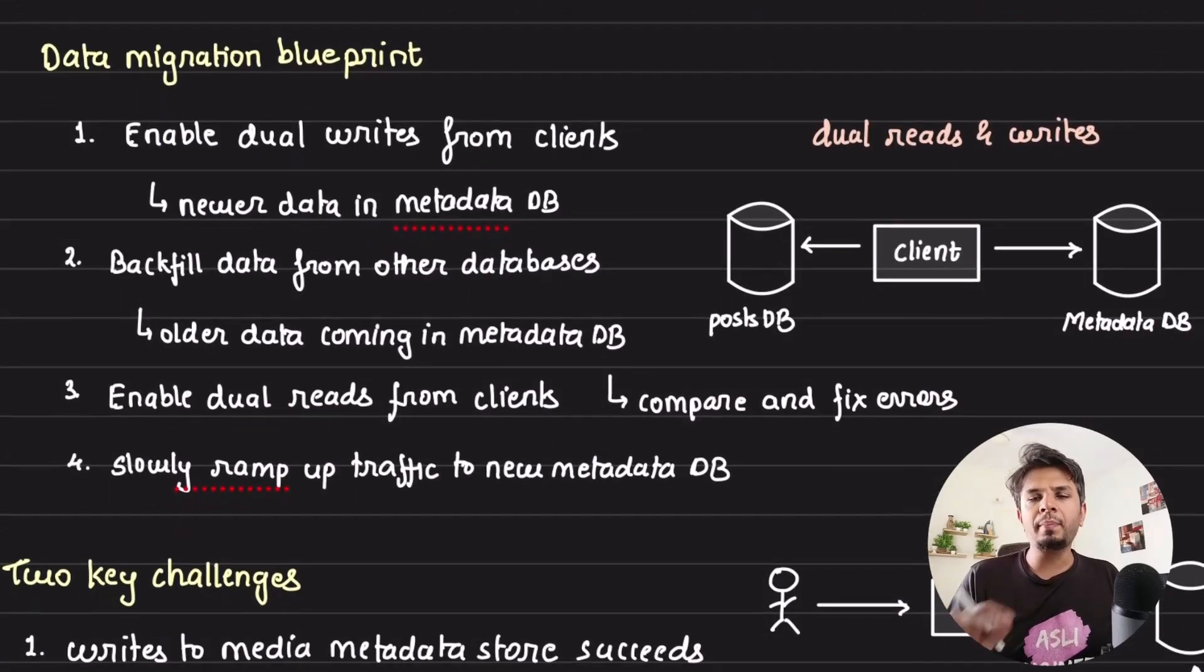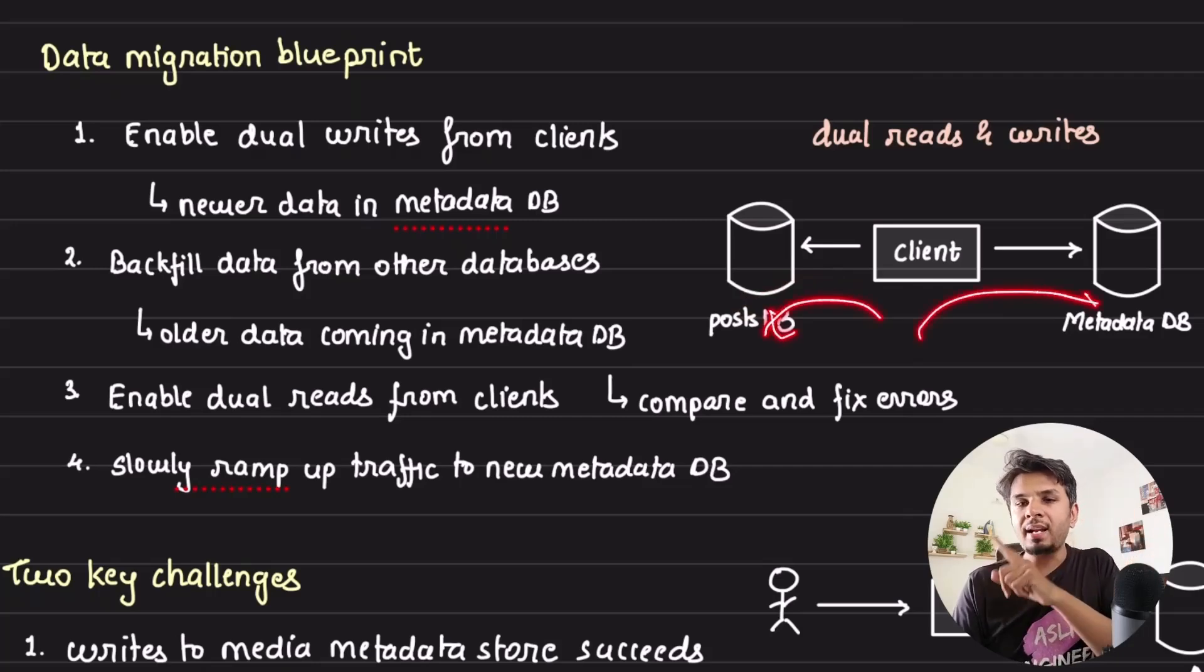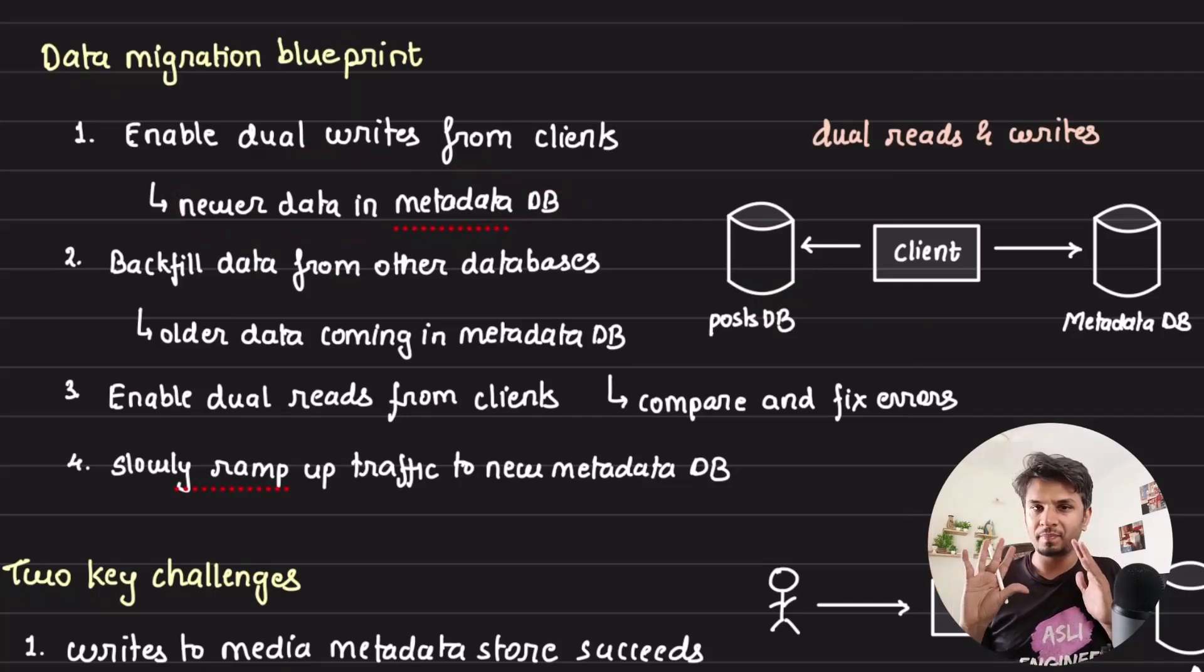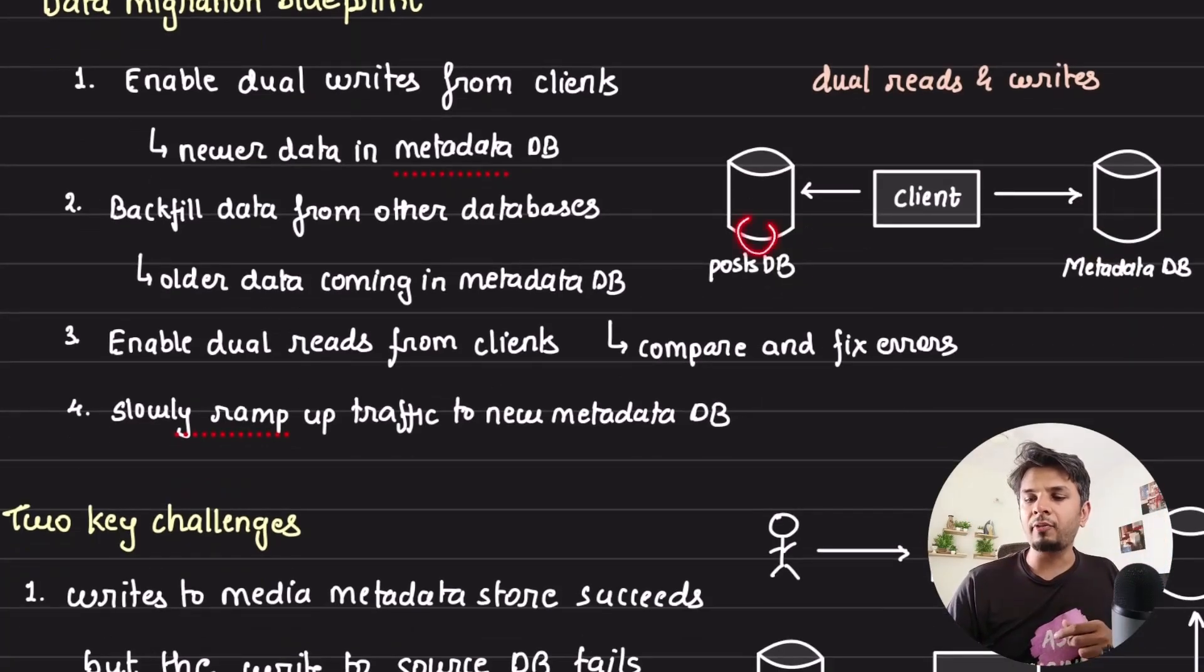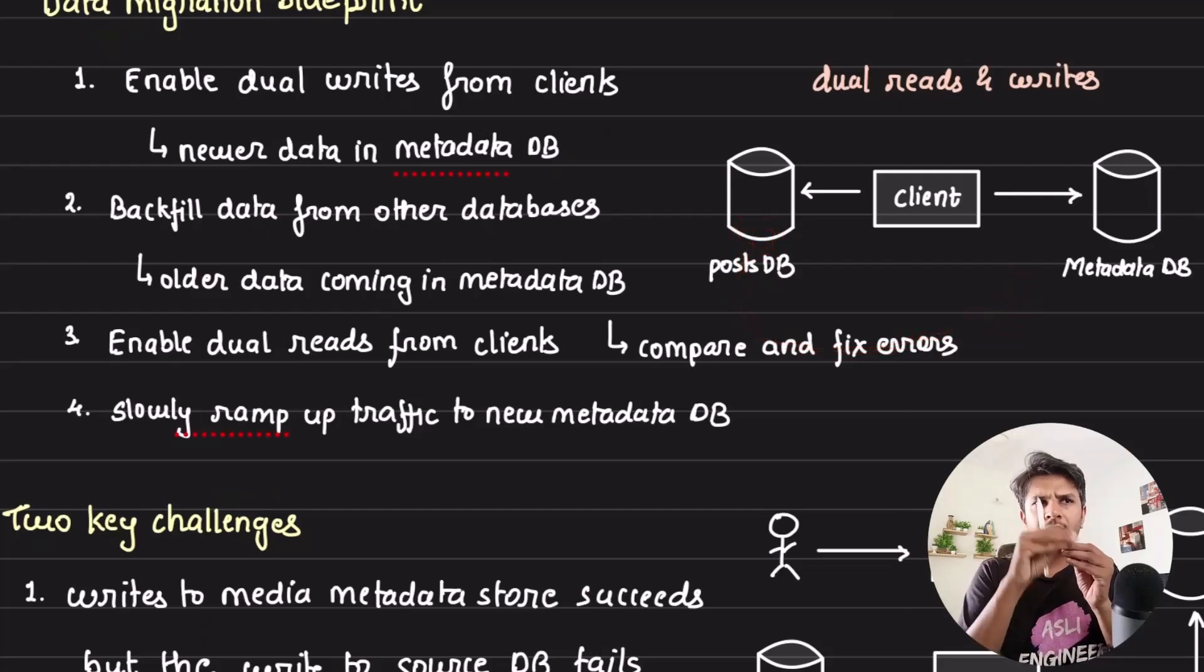The blueprint of data migration looks something like this. The first thing they did is to enable dual writes, which means on the source database, when the client is writing the metadata, the metadata goes to the source database and to this metadata DB. This ensures that the newer data is going to metadata DB. Up until now, the reads are not served from here—only writes are done. Second step is they trigger a backfill from source DB to metadata DB, so a simple job that does the backfill. This way, the older data would start moving to the metadata DB.